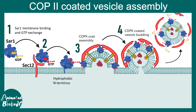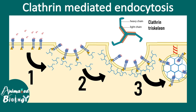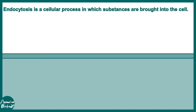This is the overall process of COP2 coated vesicle assembly. COP1 coated vesicle assembly is quite similar — it's just that the coatomer proteins are different and the GTPase is ARF instead of SAR1. Now we'll look at clathrin-mediated vesicle budding, specifically clathrin-mediated endocytosis.